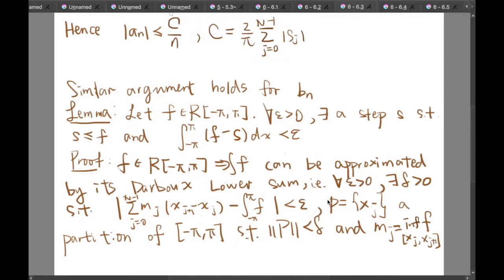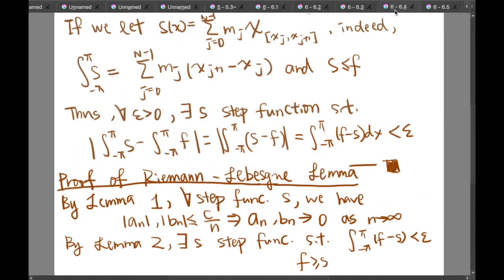Here, P equals the set of x_j is a partition of the interval negative pi to pi such that the norm of P is smaller than delta. And according to the definition of the Darboux lower sum, m_j should be equal to the infimum of f on the closed interval [x_j, x_{j+1}]. So if we let s(x) equal to the sum from j equal to 0 to m minus 1 of m_j times the characteristic function of the closed interval [x_j, x_{j+1}].